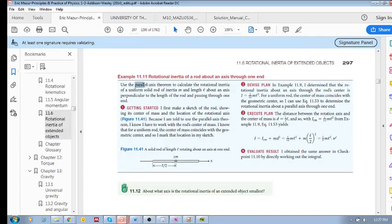Use the parallel axis theorem to calculate the rotational inertia of a uniform solid rod of mass M, length L. So it's exactly like that previous question. The previous question gave us exactly the same rod and gave us the same axis perpendicular to the length of the rod and passing through one end.